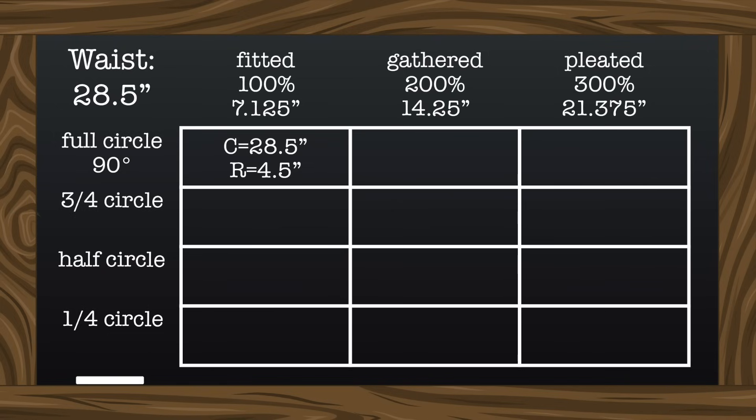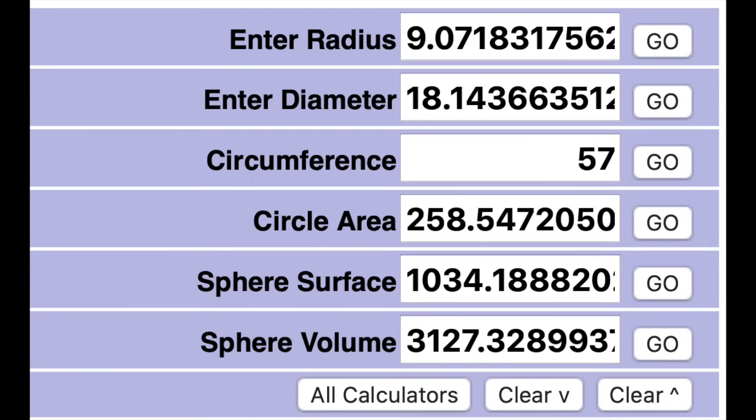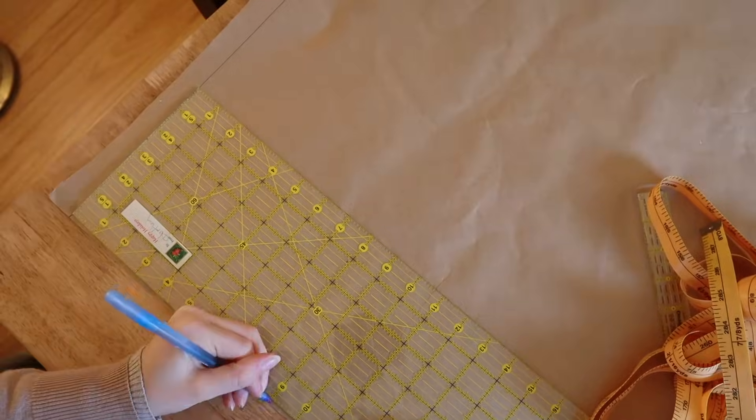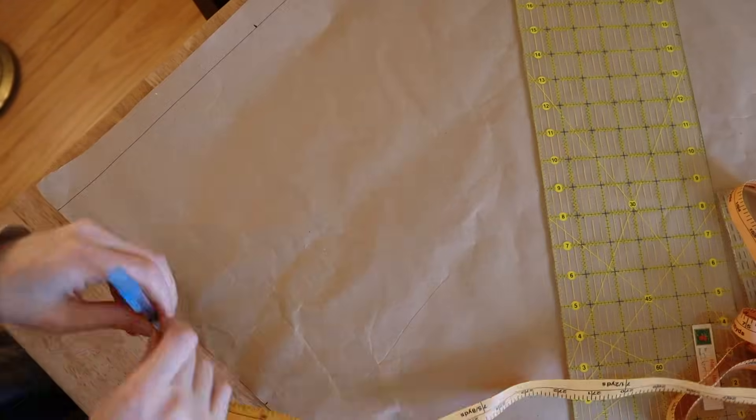The next two will also be simple. For the gathered and pleated full circle skirts, I just need to double and triple that waist measurement, giving us 57 inches and 85.5 inches, and then find those radius measurements, which are 9 and 13.625. Then they can be patterned along a 90 degree angle, just the same as the previous skirt.